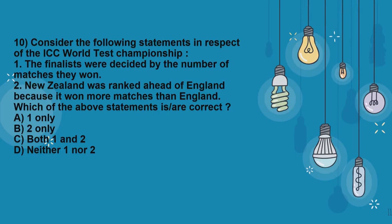Question 10, again from Sports Current Affairs: Consider the following statements in respect of the ICC World Test Championship. Statement 1 — The finalists were decided by the number of matches they won. Statement 2 — New Zealand was ranked ahead of England because it won more matches than England. The correct option is Option D: neither 1 nor 2, as both statements are incorrect. Statement 1 is incorrect — finalists were decided by percentage of points earned, not number of matches won. Statement 2 is incorrect — New Zealand won fewer matches than England but won more points, thus entering the final.